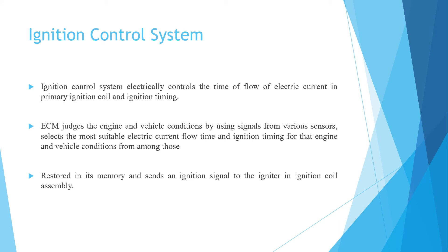The ignition control system electrically controls the time of flow of electric current in the primary ignition coil and the ignition timing. The ECM judges the engine and vehicle condition by using signals from various sensors, selects the most suitable electric current flow time and ignition timing for that engine and vehicle condition from among those stored in its memory, and sends an ignition signal to the igniter in the ignition coil assembly.